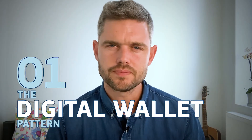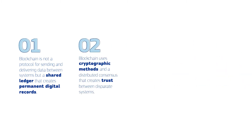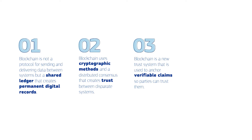The digital wallet pattern. Central to this second pattern is the concept of a verifiable credential. Blockchain is often misunderstood as yet another data sharing protocol — just another technology to share information, but in a distributed way. Blockchain is not a protocol for sending and delivering data between systems, but a shared ledger that creates permanent digital records. It uses cryptographic methods and a distributed consensus that creates trust between disparate systems and users, and creates an immutable and decentralized record of logs.